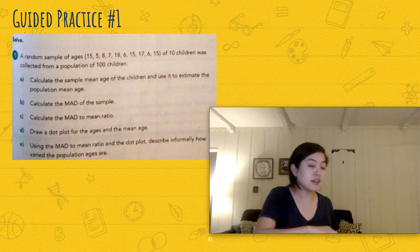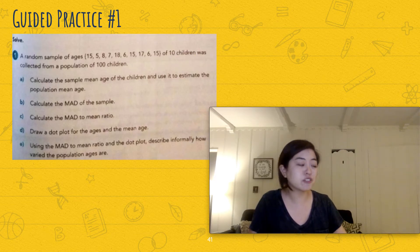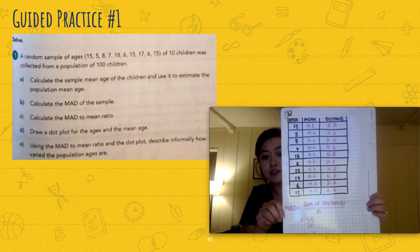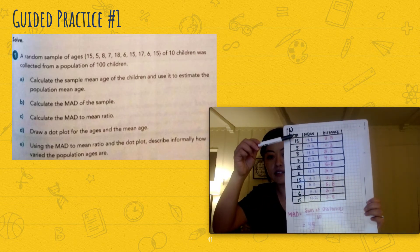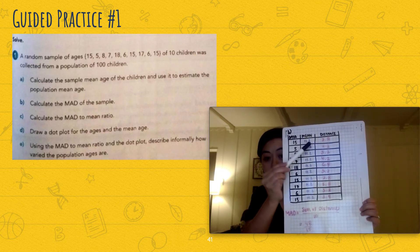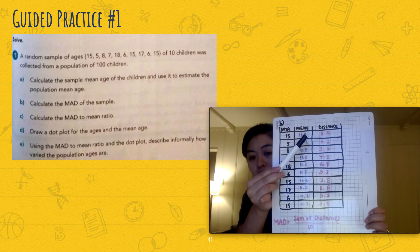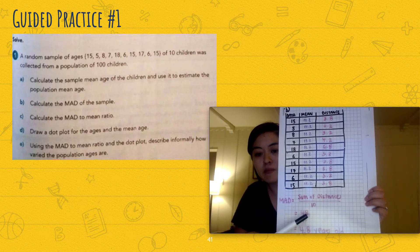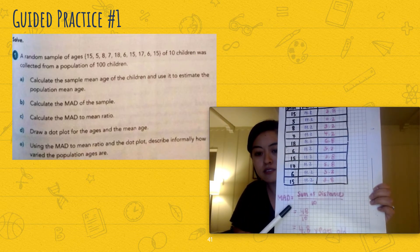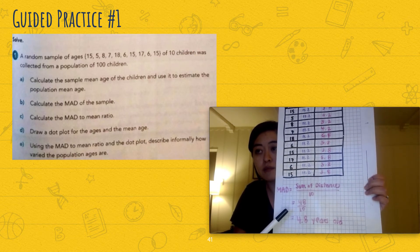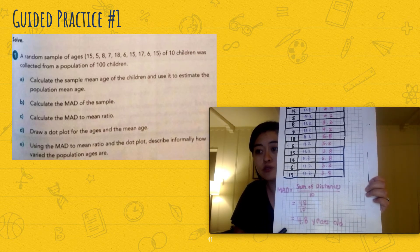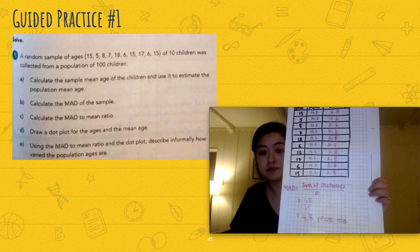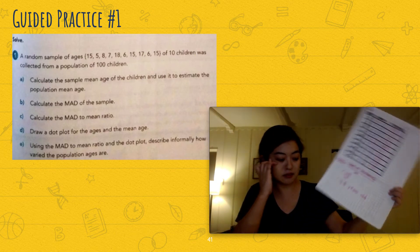And then part B says calculate the MAD of the sample. So I will recommend drawing this part. So I put all the data values here, the mean here, and the distance here. And then to find the MAD, you want to do the sum of the distances divided by 10, which is 48 divided by 10, and that's equal to 4.8 years old as the mean absolute deviation. So the data values on average deviate 4.8 years old from the mean.